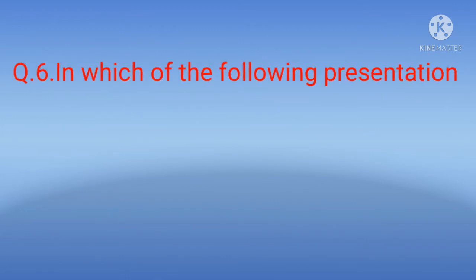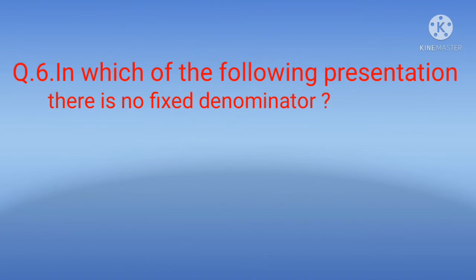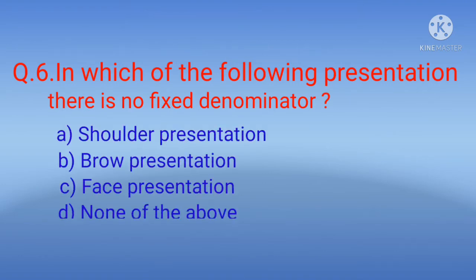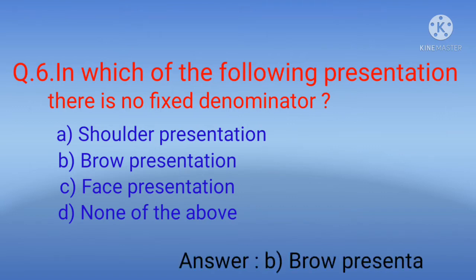Question 6: In which of the following presentations is there no fixed denominator? Options: A) shoulder presentation, B) brow presentation, C) face presentation, D) none of the above. The correct option is B) brow presentation.